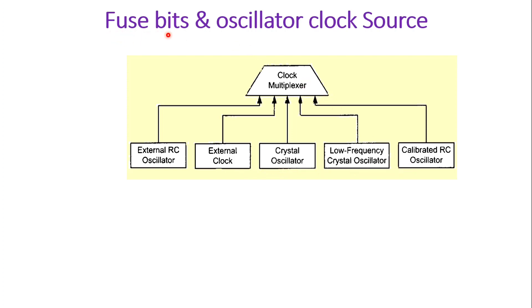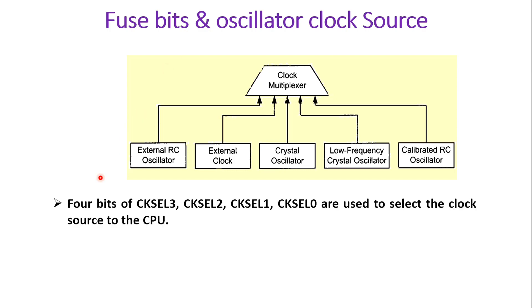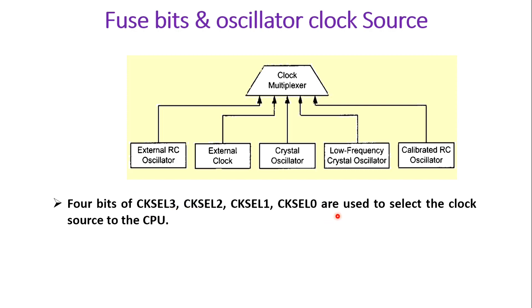This is decided by the fuse bits, which we have already covered in the last video. Four fuse bits of the lower fuse byte are used: Clock Select 3, Clock Select 2, Clock Select 1, and Clock Select 0. These 4 bits are used to select the clock source to the CPU.